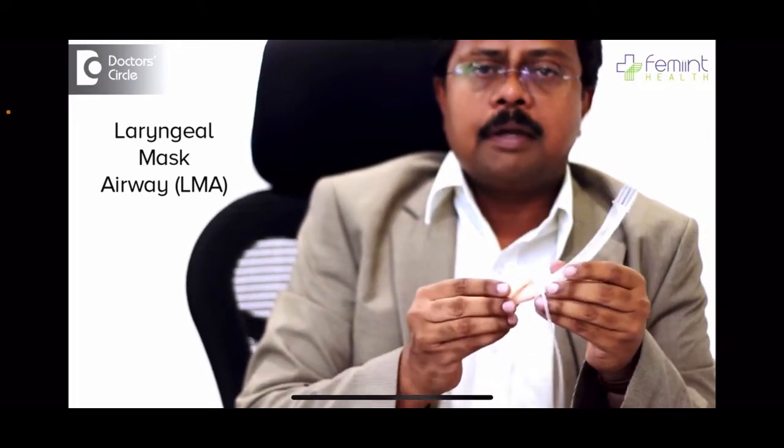General anesthesia can be administered either through a mask, through a laryngeal mask airway, or through an endotracheal tube. The laryngeal mask airway, invented in 1988 and in practice since then by Dr. Archie Brain, has many advantages over an endotracheal tube. It has a small mask surrounded by a cuff with a tube attached, and when placed in the patient, it sits on top of the windpipe and is used to deliver oxygen and anesthetic gases.